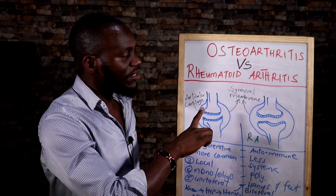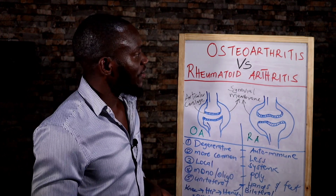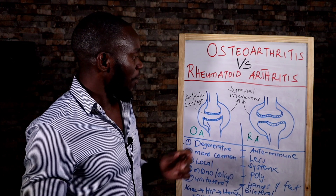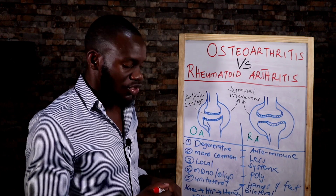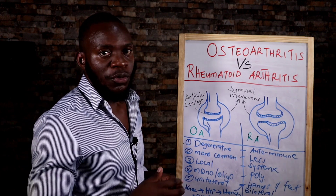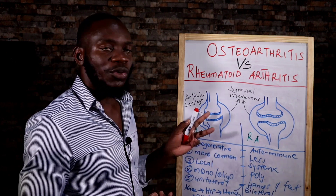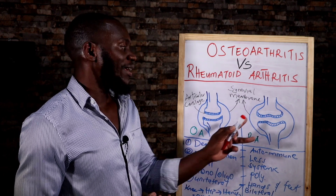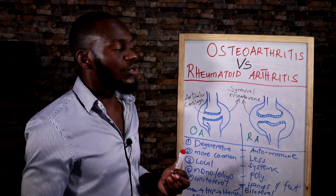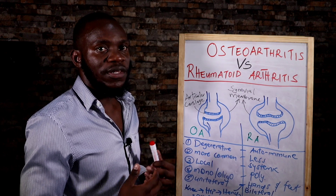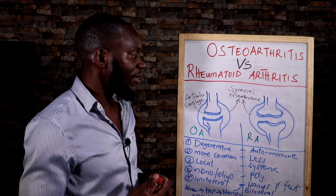Ladies and gentlemen, osteoarthritis in relation to rheumatoid arthritis — what is the difference? Osteoarthritis is a more local condition. Even people who have injuries, those who play football or go to the gym, when they're told they have arthritis it means osteoarthritis, not rheumatoid arthritis — because osteoarthritis is local and rheumatoid arthritis is systemic. Basically, arthritis is an inflammatory condition where the joint cartilage is destroyed, causing bone to rub against bone, producing pain and discomfort.